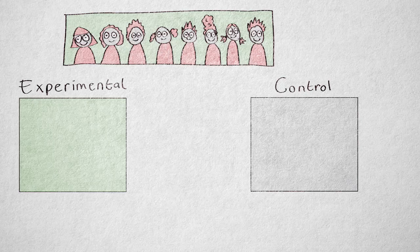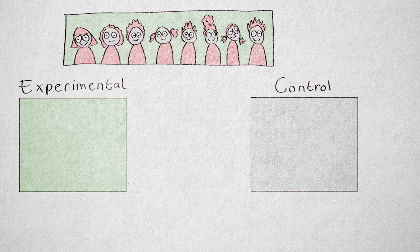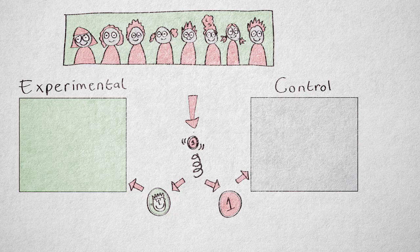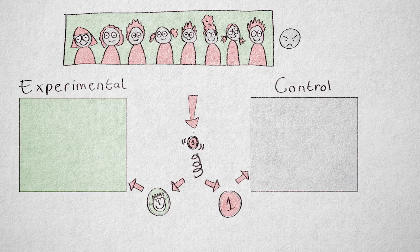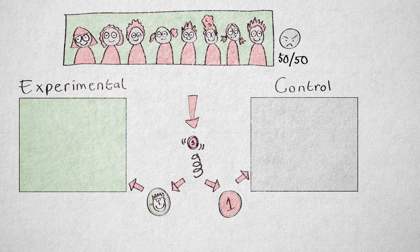Okay, let's see why. I could have randomly assigned children to the conditions by flipping a coin, heads for the experimental condition, tails for the control condition. A naturally aggressive child would have a 50-50 chance of ending up in the experimental condition.